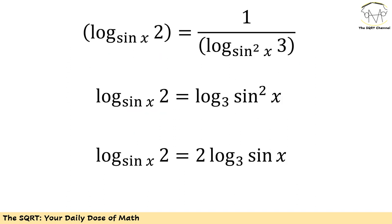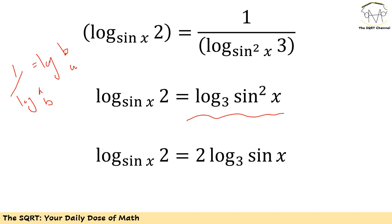We replace 1 over log of a in base b with log of b in base a. We keep the left hand side as is, and replace the right hand side with log of sine squared of x in base 3. Then we replace log of sine squared of x in base 3 with 2 times log of sine of x in base 3, using the identity: log of a squared in base b equals 2 times log of a in base b.